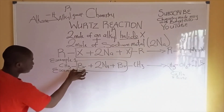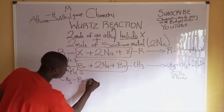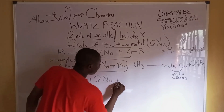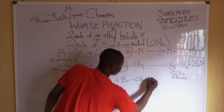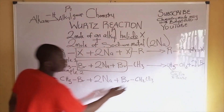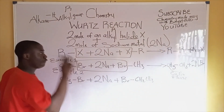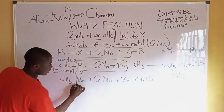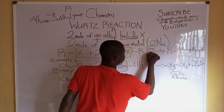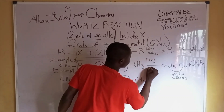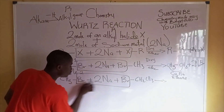Now let's take another example where the alkyl groups are different. Let's take methyl bromide reacting with two moles of sodium metal, and another alkyl halide like ethyl bromide — C2H5 combined with bromine. Remember, the Wurtz reaction works in the presence of dry ether.